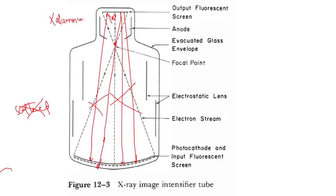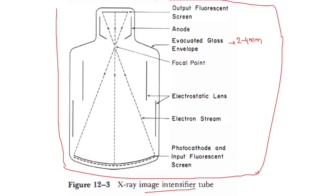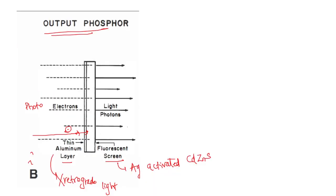The whole assembly of the X-ray image intensifier is enclosed in a glass envelope about 2 to 4 mm thick. The entire equipment is kept in a lead-lined metal container, which prevents any stray radiation from reaching the operator.